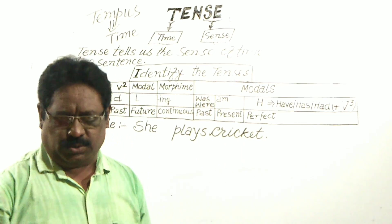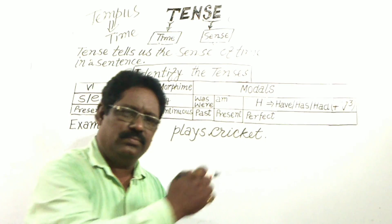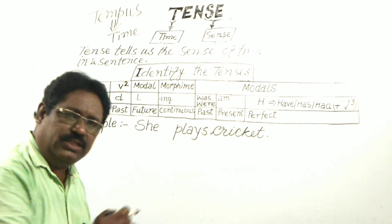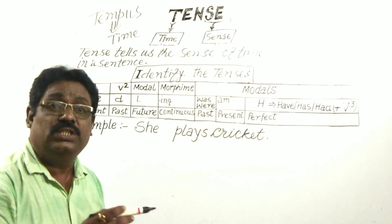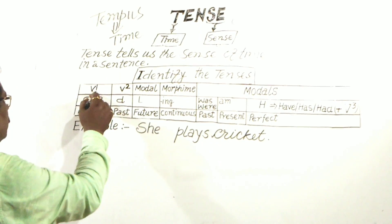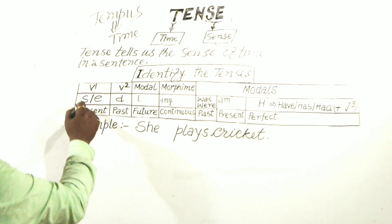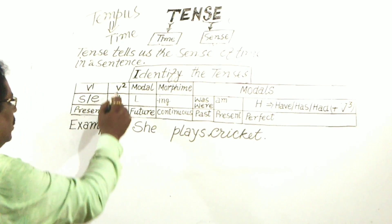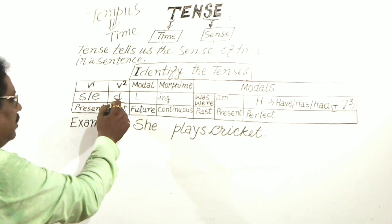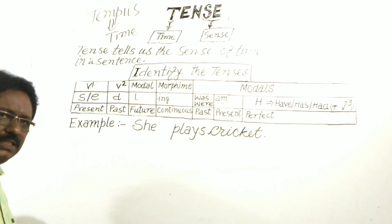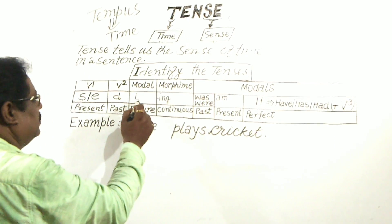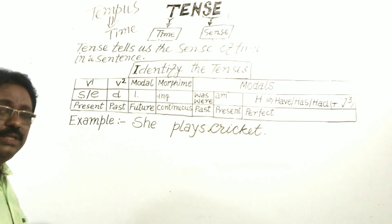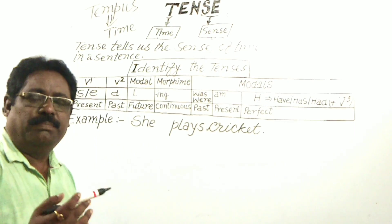There are sub-tenses also. Here is a trick to identify which sentence is in which tense. Verb one ending with S or ES is in simple present. Verb two — past form — ending with D is in past tense. A modal ending with the letter L indicates future tense. A modal is a part of the helping verb.